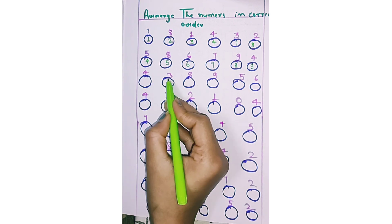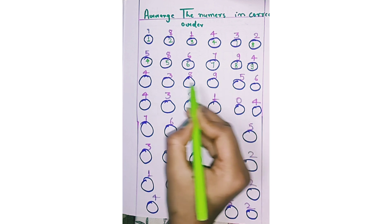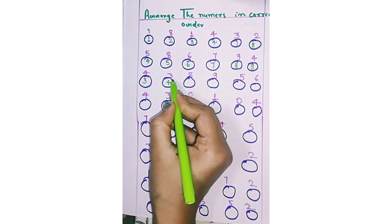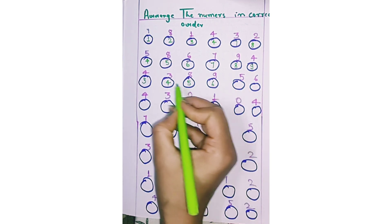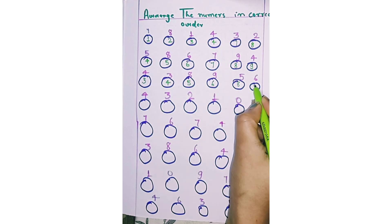Again 4, 3, 8, 9, 5, and 6. Which one is smallest? 3. Again 4, compare 5, next 6, next 8, next 9.